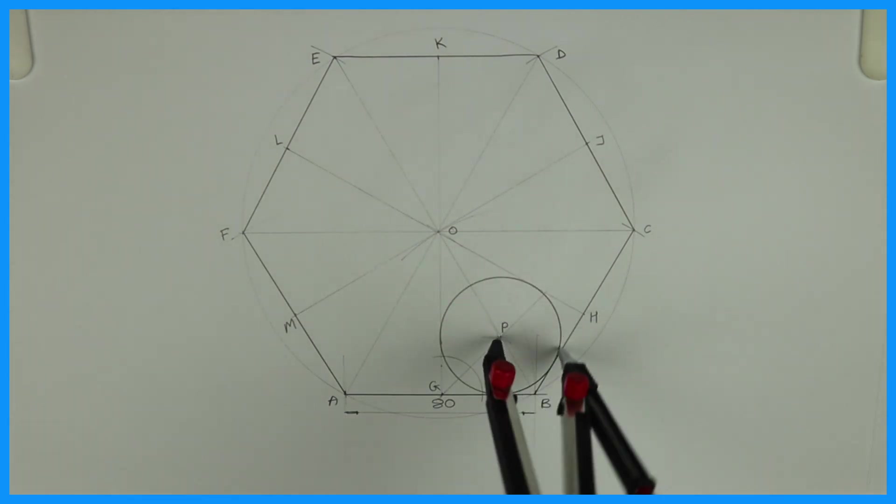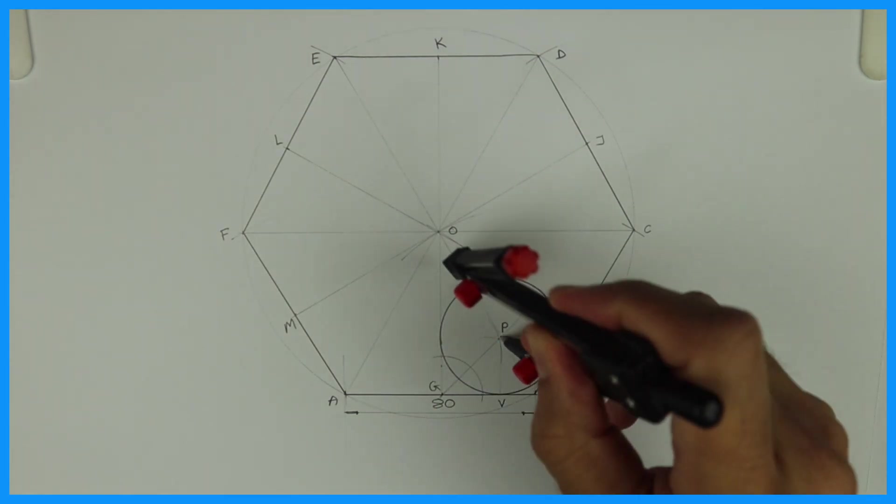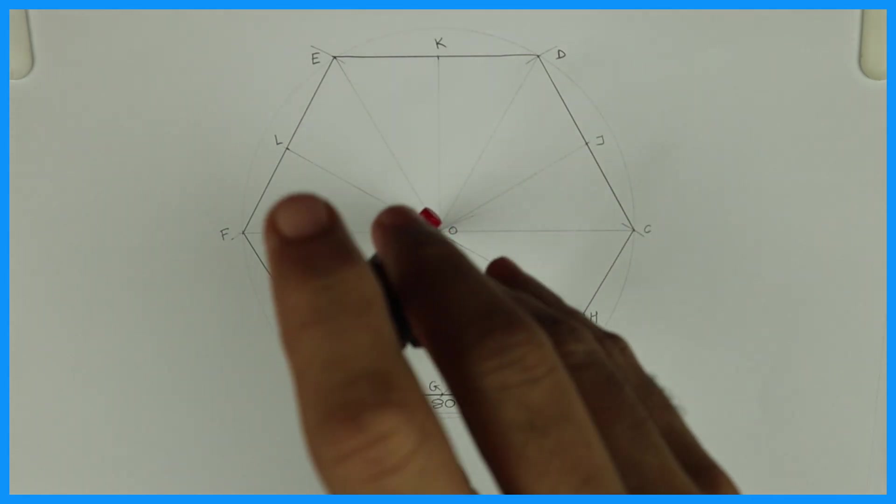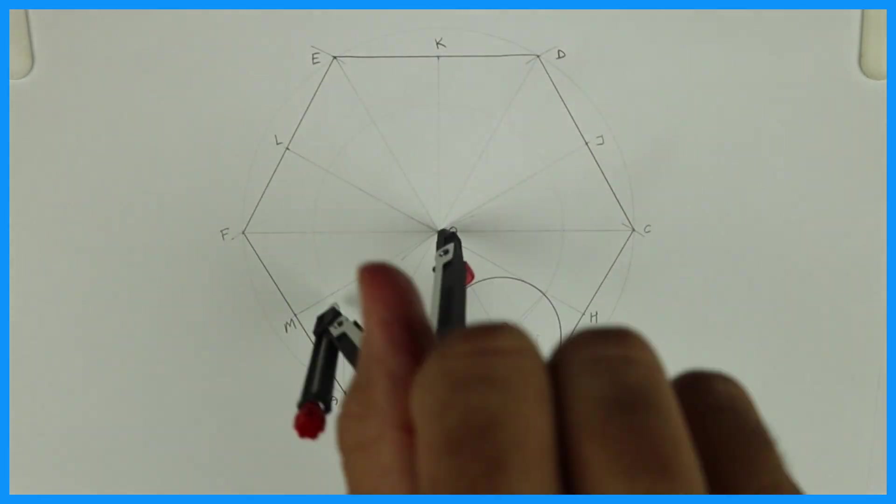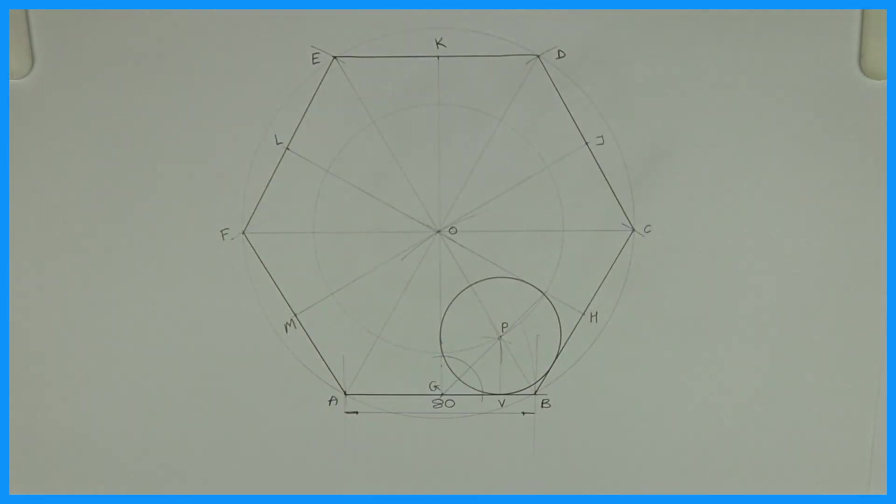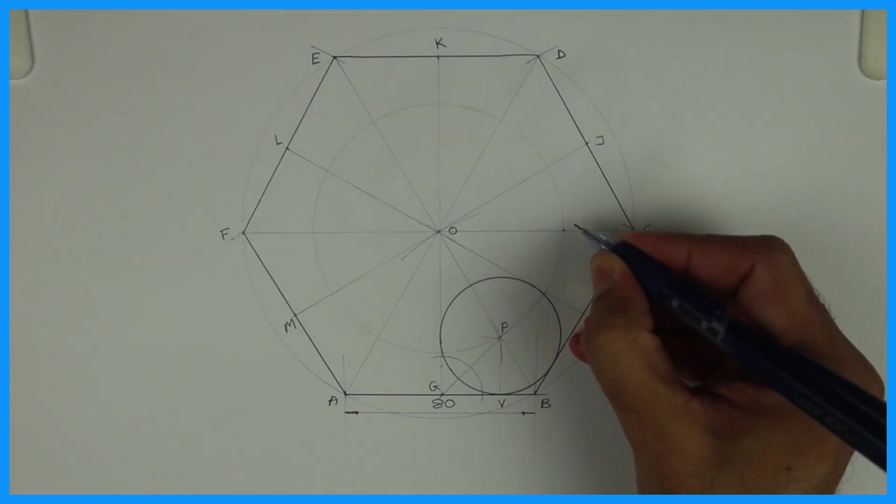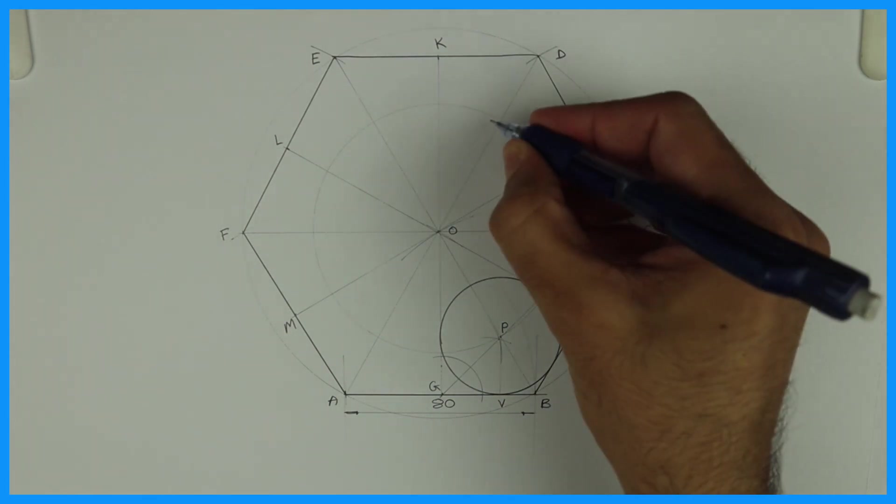If you want to draw the remaining circles, then you need to transfer O to P. See this? Take O to P and draw a circle. Wherever it is intersecting on OC, OD, OE, OF, and OA, you can write P, Q, R, S, T.